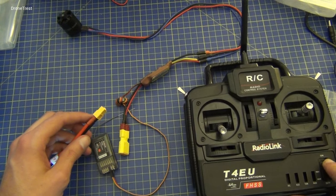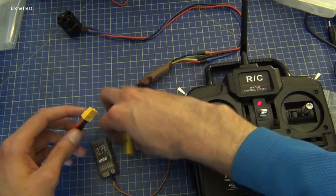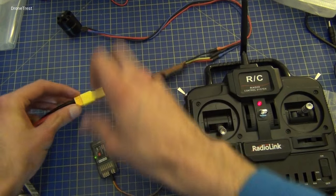We then turn the radio control on making sure the throttle stick is all the way down. We plug in the battery and the receiver is powered so we're good to go.